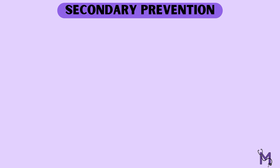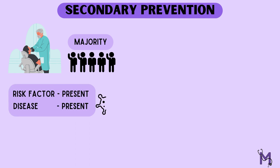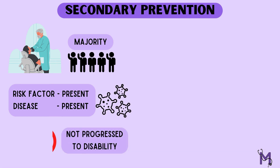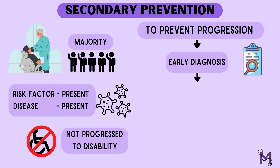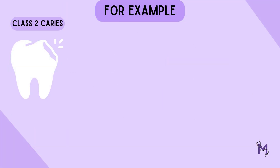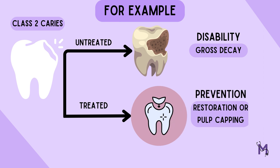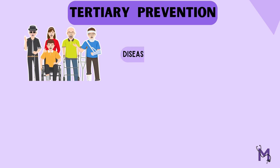The next level is secondary prevention. In our clinical journey, this is the category of patients we will encounter as a majority. Secondary prevention is done in cases where both risk factors as well as the disease have occurred, but it has not yet progressed to a disability. Early diagnosis — like screening or diagnostic tests — along with treatment is necessary to prevent progression. For example, a patient diagnosed with a class 2 cavity: secondary prevention to prevent its progression into gross decay could be through simple restorative procedures or pulp capping.